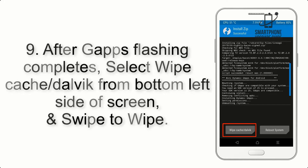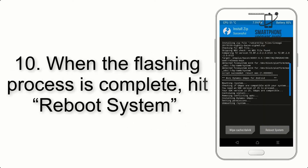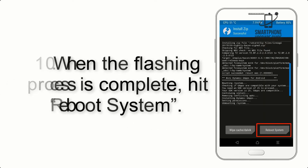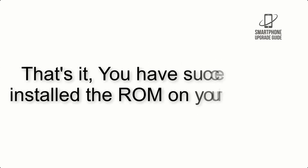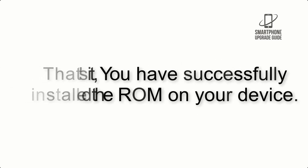Step 9: After GApps flashing completes, select Wipe Cache and Dalvik from the bottom left side of the screen and swipe to wipe. Step 10: When the flashing process is complete, hit Reboot System. That's it — you have successfully installed the ROM on your device.